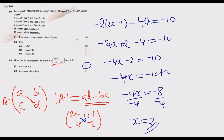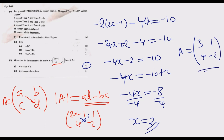With x equals 2, we substitute back into the matrix. The top-left entry becomes 2 times 2 equals 4, minus 1 gives 3. So the new matrix A becomes: top row [3, 1], bottom row [−4, −2].